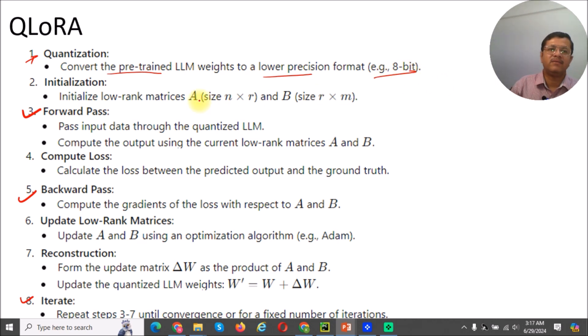Then apply the forward pass. Compute the output by using the current low-rank matrices A and B. Then compute the loss between the predicted output and ground truth.